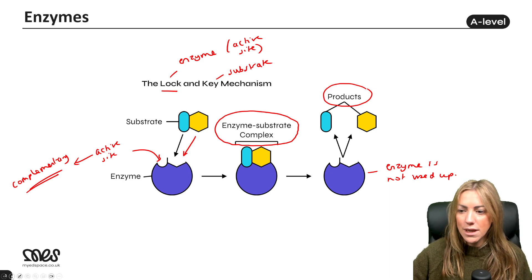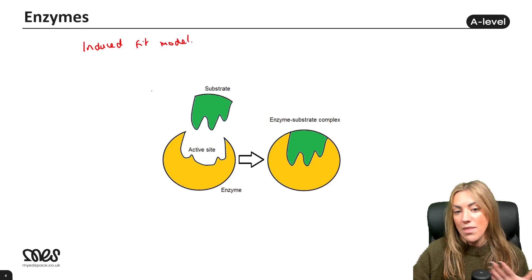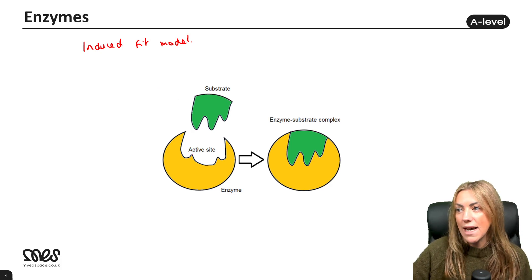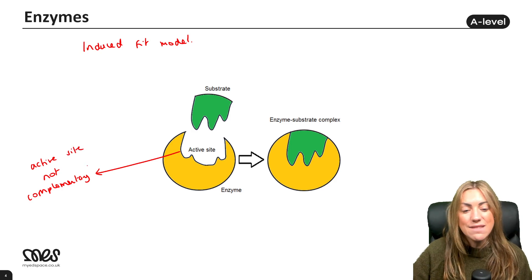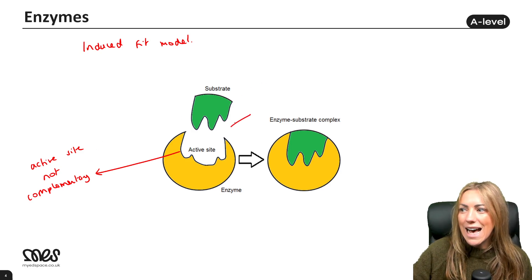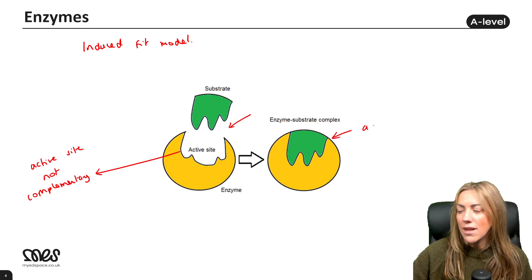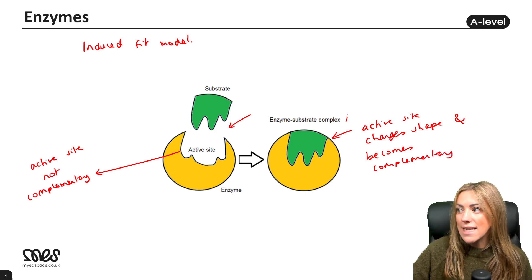At A-level we also have the induced fit model. The difference from the lock and key model, which you can already see on the diagram, is that the enzyme's active site is not initially complementary to the substrate. But as the substrate moves into the active site, the active site changes shape and becomes complementary.